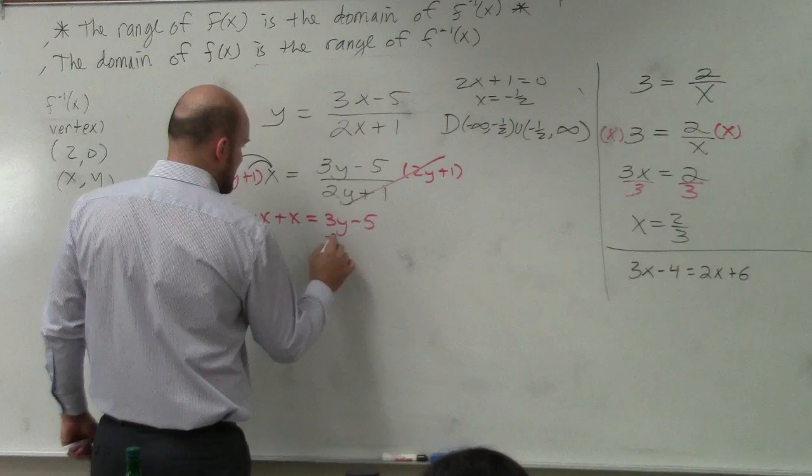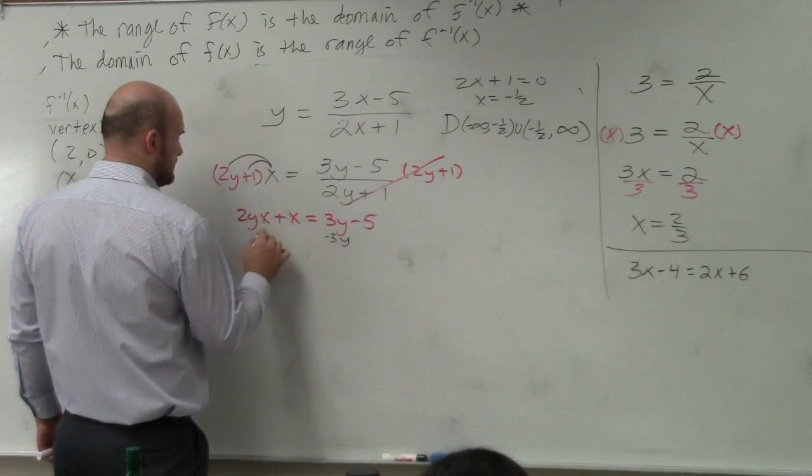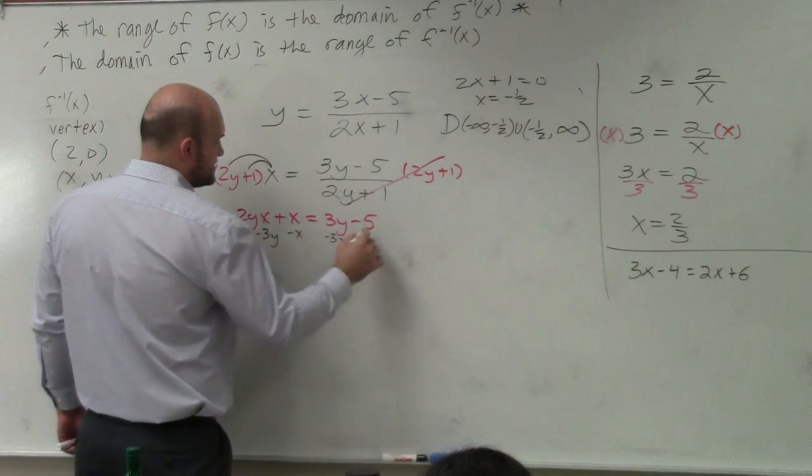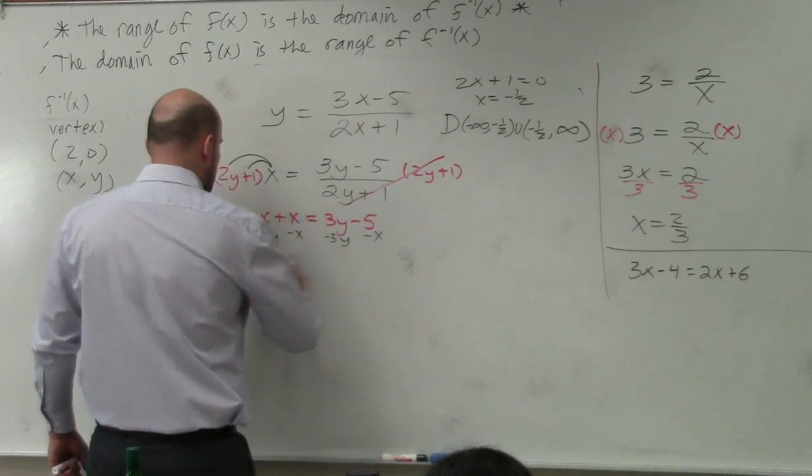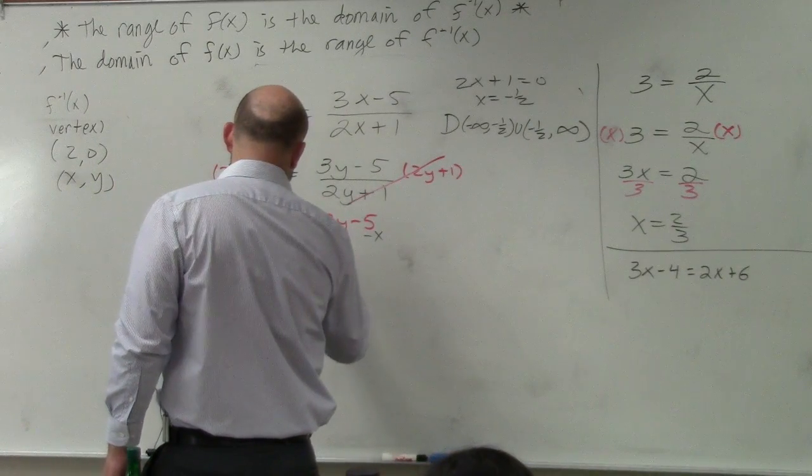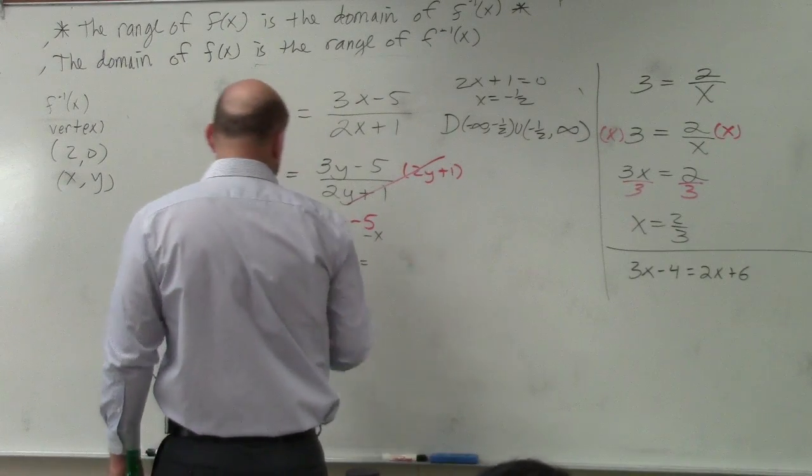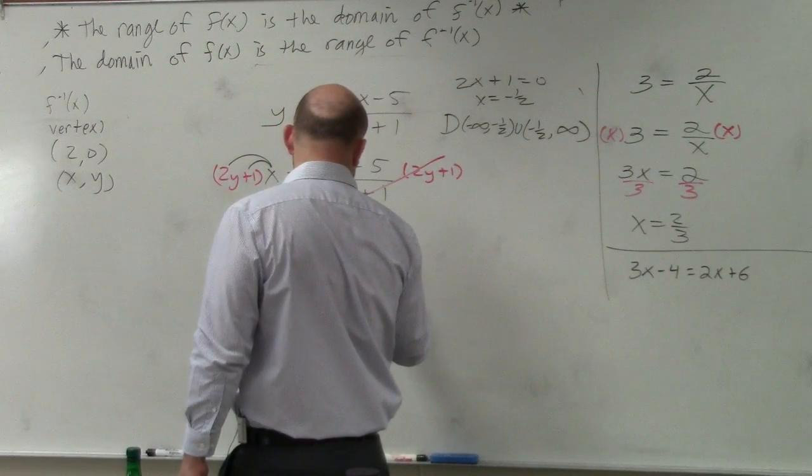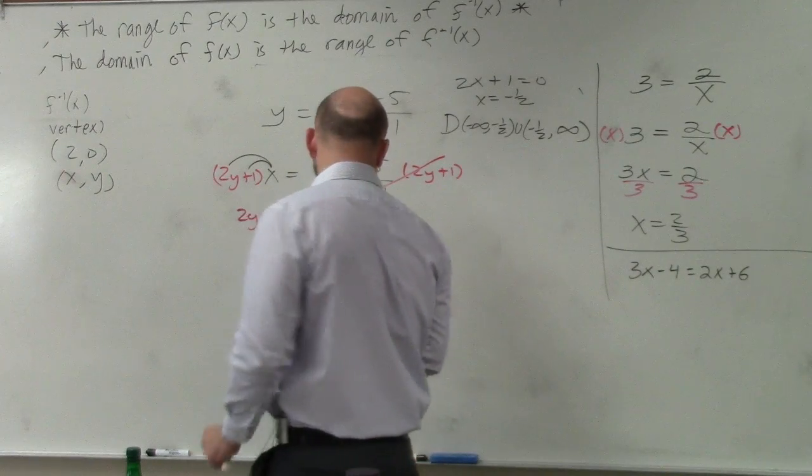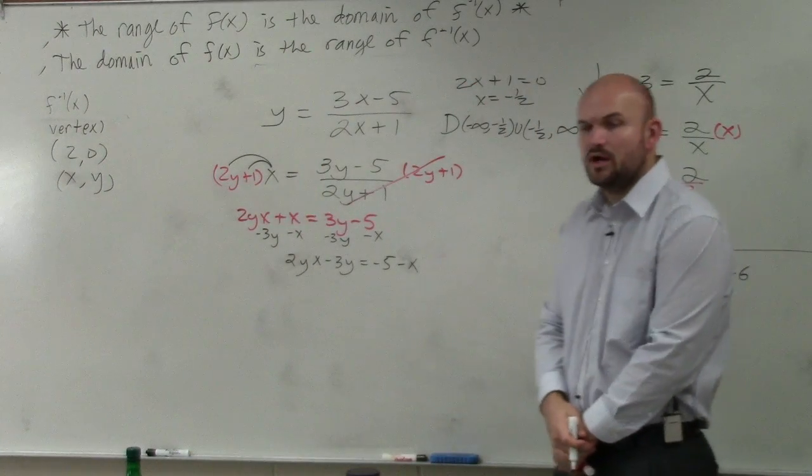So what I'll do is I'll subtract the 3y and I'll get this x to the other side. So now I'm left with 2yx minus 3y equals negative 5 minus x.